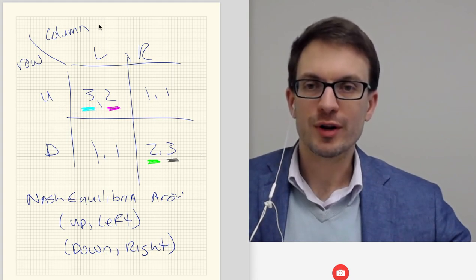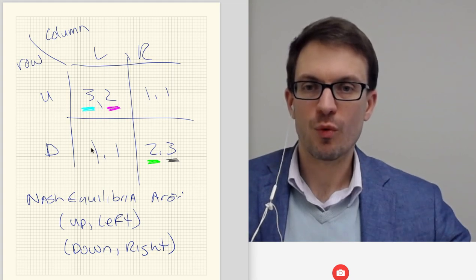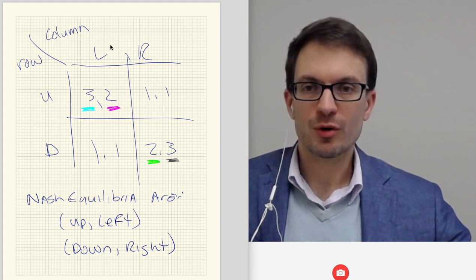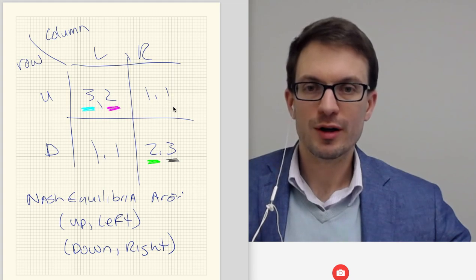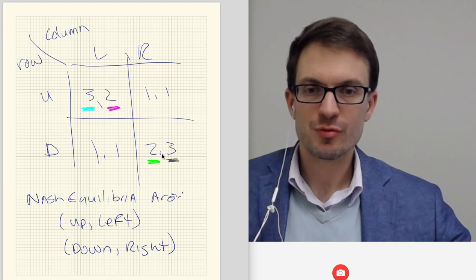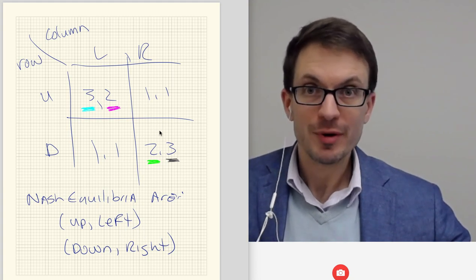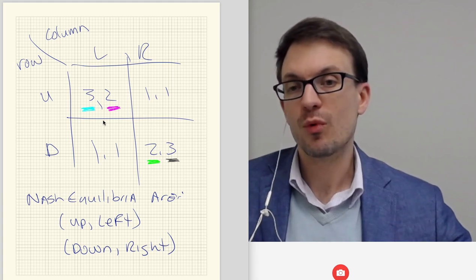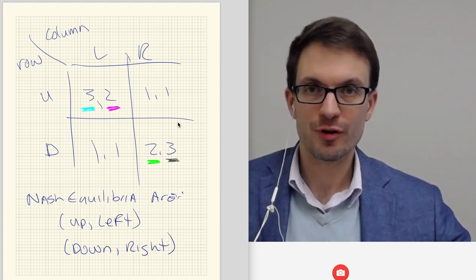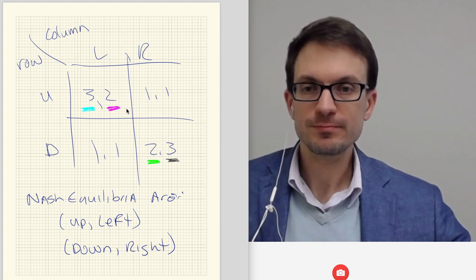Why? Because when column selects left, row player definitely wants up because three is bigger than one. When column player selects right, row player wants down because two is bigger than one. When row player selects up, column player wants left because two is bigger than one. And when row player selects down, column player wants right because three is bigger than one. So we have two Nash equilibria. Nobody has a dominant strategy here because there's not one single strategy that each player prefers, irrespective of its opponent's strategy.